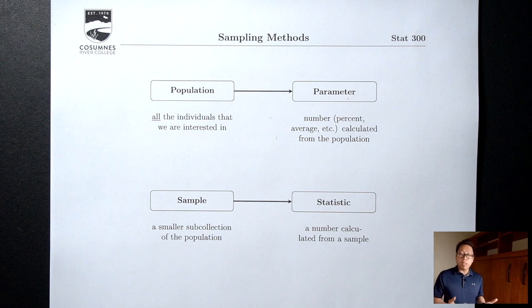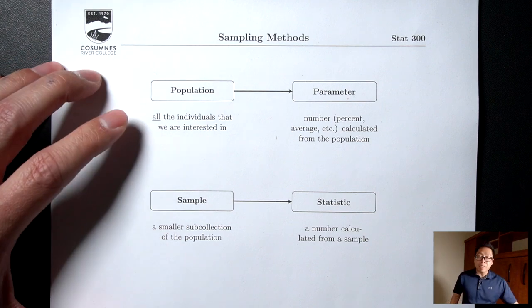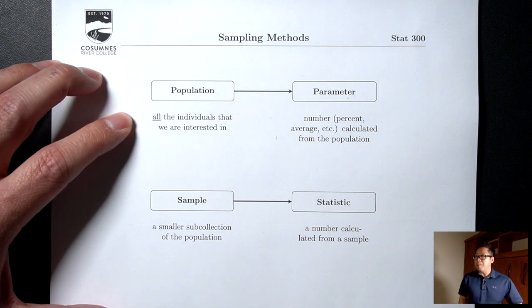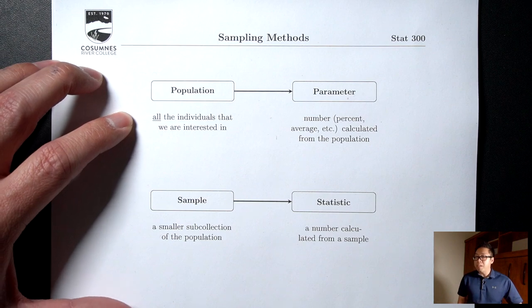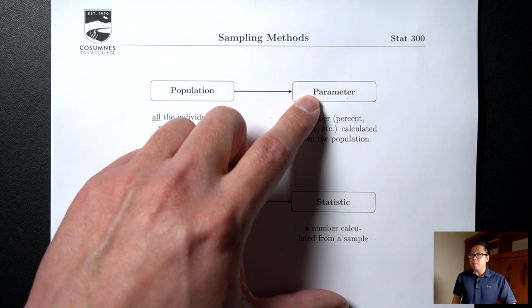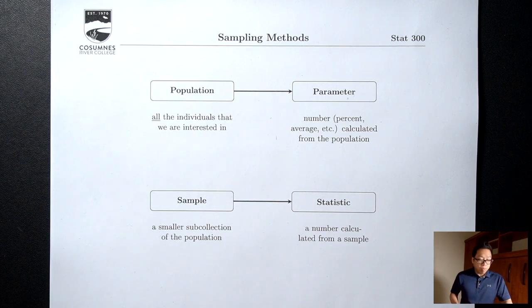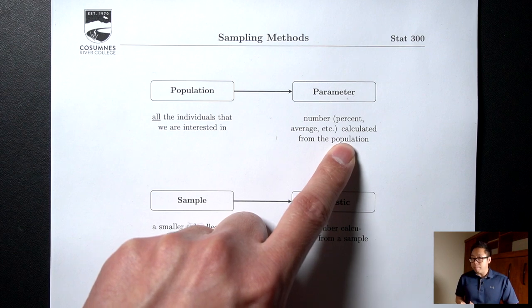Say I'm interested in the percent of people in Sacramento who have a PlayStation 5. If I'm able to ask everybody in Sacramento whether they have a PlayStation 5, the percent I get would be called a parameter. A parameter is a number — like a percent or an average — that you calculate from everybody in the population.